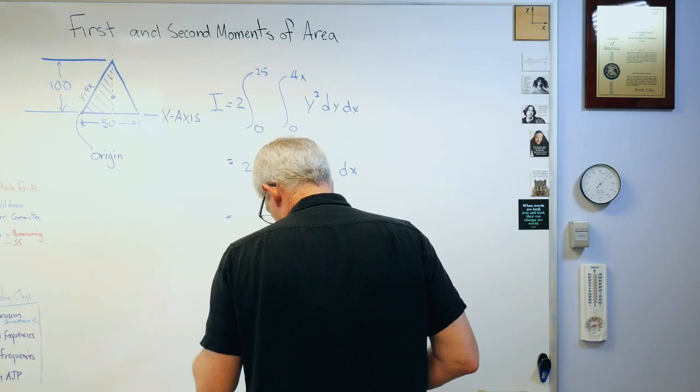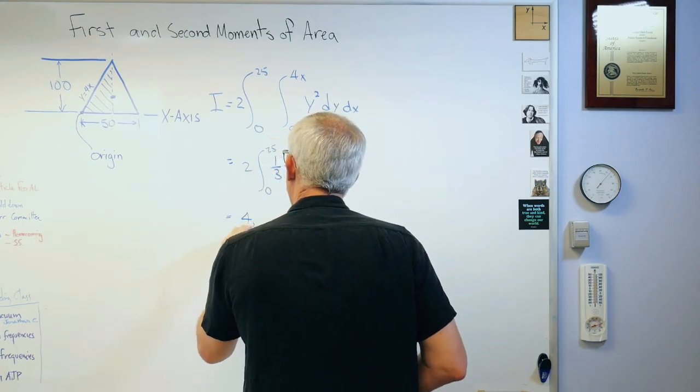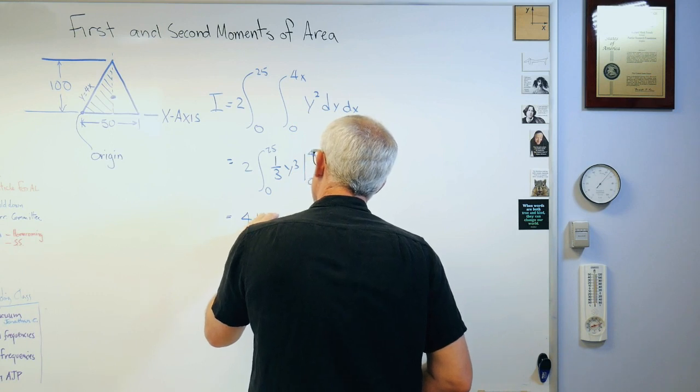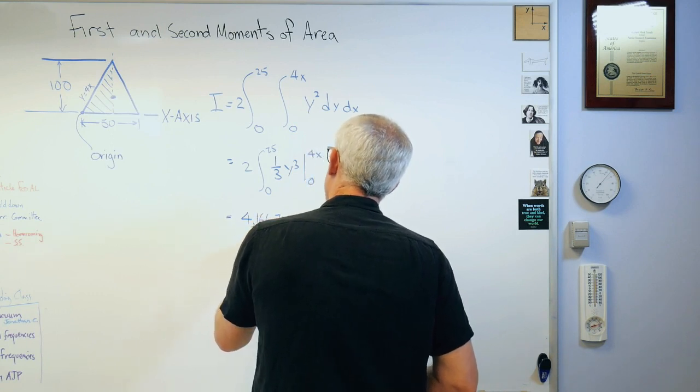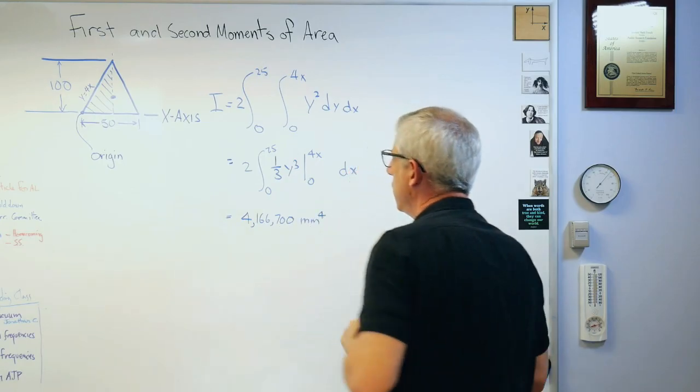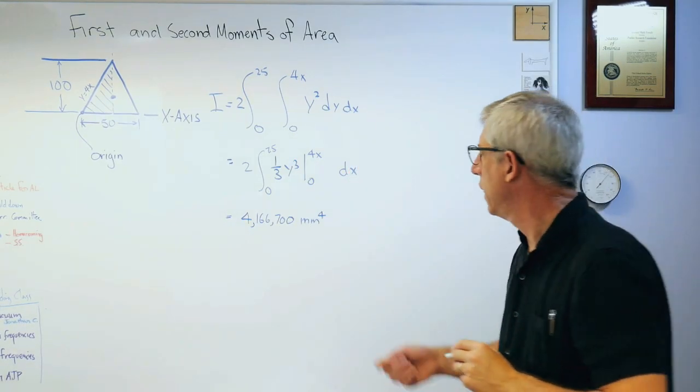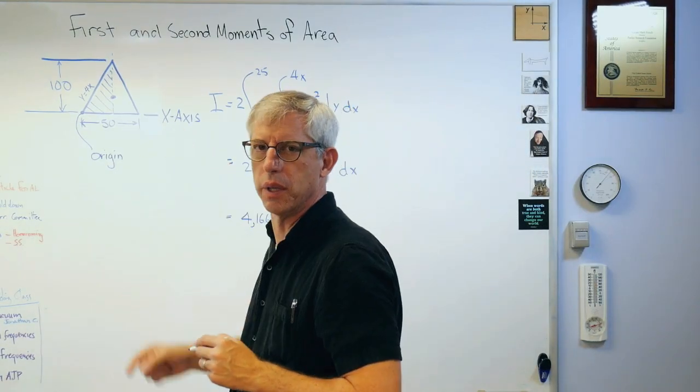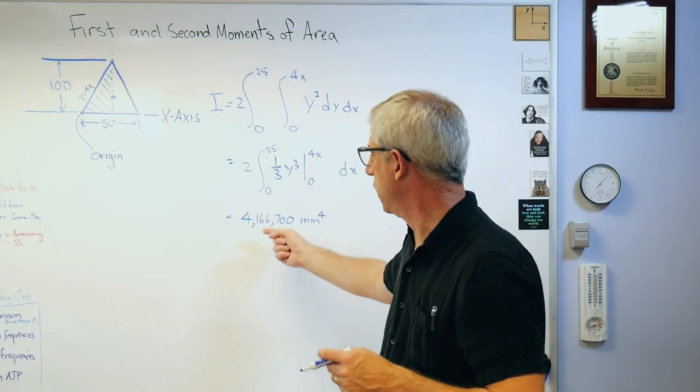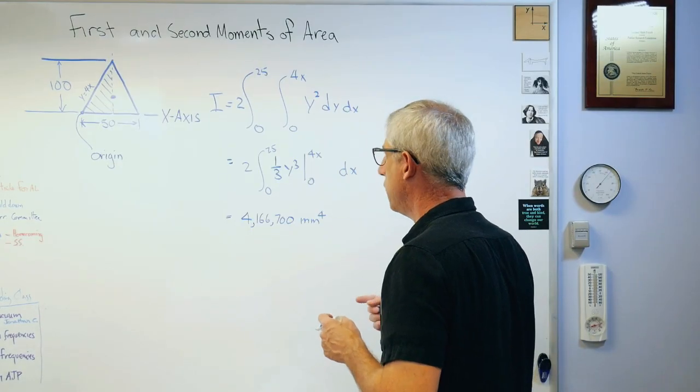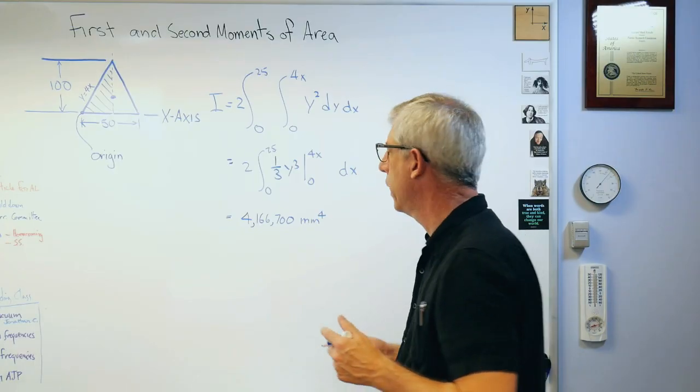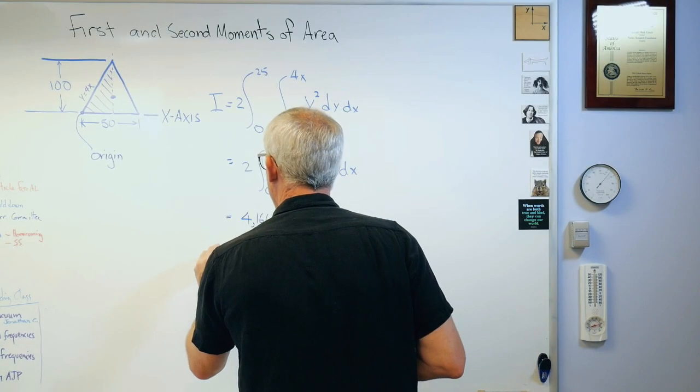When you evaluate and integrate that, what you're eventually going to wind up with is 4,166,666.67. You get that number. It's really big because a millimeter is really small. If you did this in meters, this would be a really really tiny number. You'd have to divide it by, let's see, thousand to the fourth power.